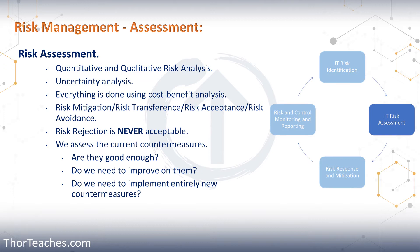That brings us to risk transference — that is us transferring the risk to someone else. Most often that would be through buying insurance, but it could also be by sharing the risk. With insurance, we pay them a certain amount of money, and if something bad happens, they give us money back. The sharing of risk could be us doing a project with someone else. If we want to launch a new product and we go in as 50-50 partners with someone else, then we only have half the risk — but obviously we also only have half the reward. In most cases, risk transference is buying insurance.